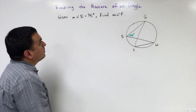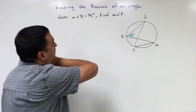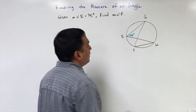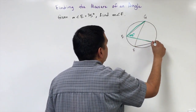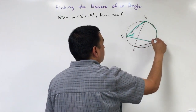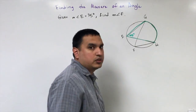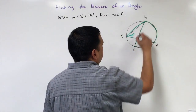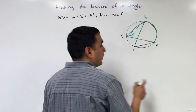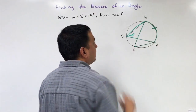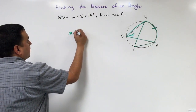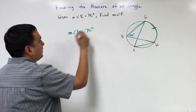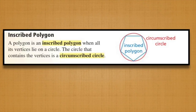Given that the measure of angle E is 75 degrees, find the measure of angle F. Angle E is an inscribed angle with intercepted arc GH. Angle F also has the same intercepted arc GH, so by the theorem, the measure of angle F equals the measure of angle E, which is 75 degrees. A polygon is an inscribed polygon when all its vertices lie on a circle; the circle that contains the vertices is called a circumscribed circle.